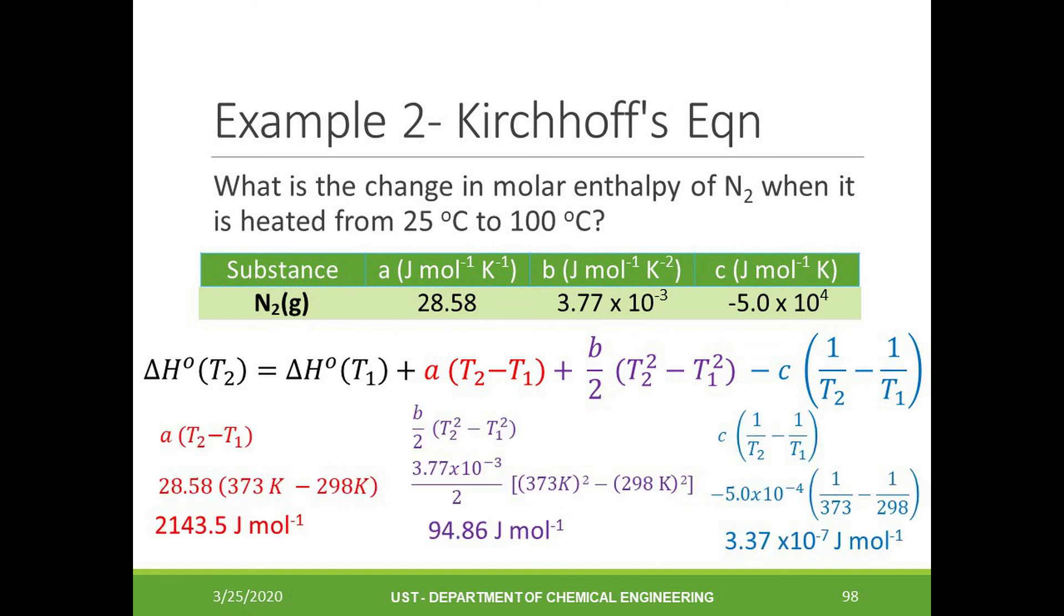Substituting the empirical values of A, B, and C, and temperatures 1 and 2, we will obtain 2,143.5 joules per mole, 94.86 joules per mole, and 3.37 times 10 raised to negative 7 joules per mole.